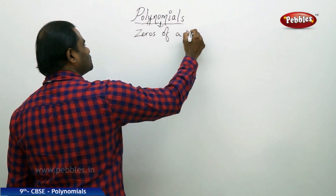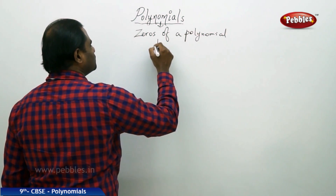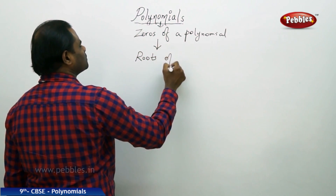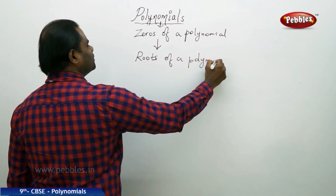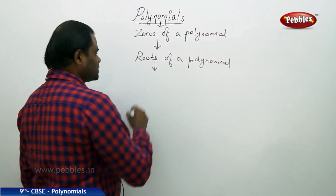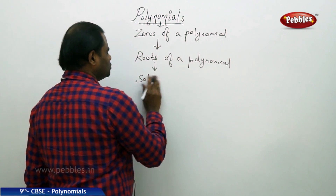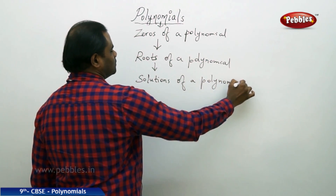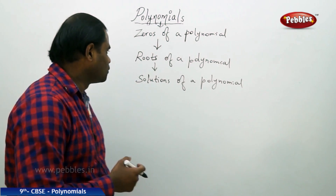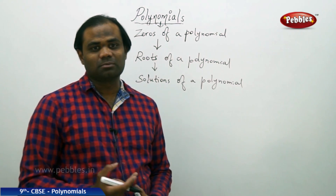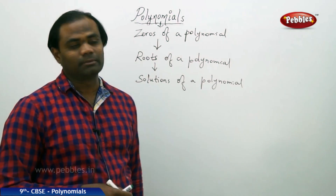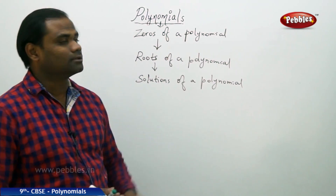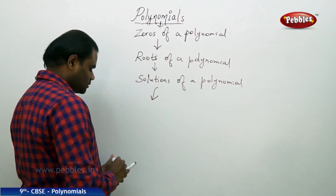The zeros of a polynomial are also understood as roots of a polynomial, and they are also understood as solutions of a polynomial. If I want to find the roots of a polynomial, it is nothing but indirectly finding the zeros. If I want to find the solution of a polynomial or solve the polynomial, it is also indirectly finding the zeros of the polynomial.